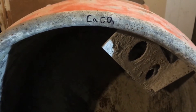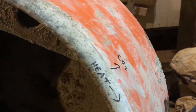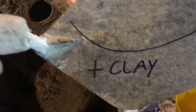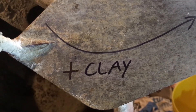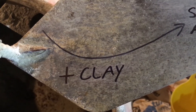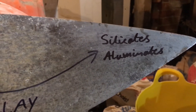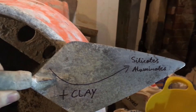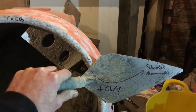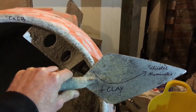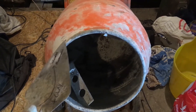Hydraulic lime is made in a similar way to air lime, by heating calcium carbonate and driving off CO2, but this time there's a bit of clay added to the mix. The clay contains minerals like alumina and silica that combine with the calcium carbonate to form silicates and aluminates, and it's these compounds that allow the hydraulic lime to set in the presence of water.